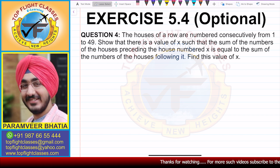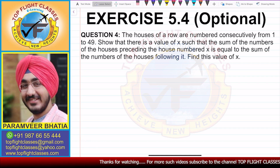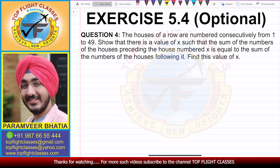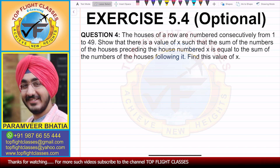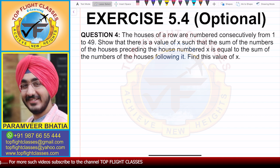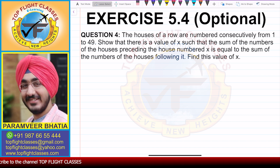Question 4 says: the houses of a row are numbered consecutively from 1 to 49. Show that there is a value of x such that the sum of numbers of the houses preceding the house numbered x is equal to the sum of the numbers of the houses following it. Find this value of x.